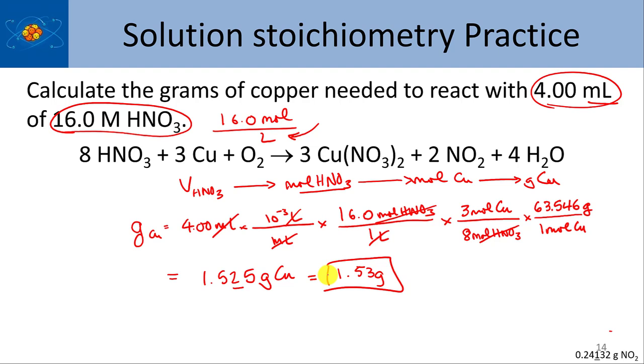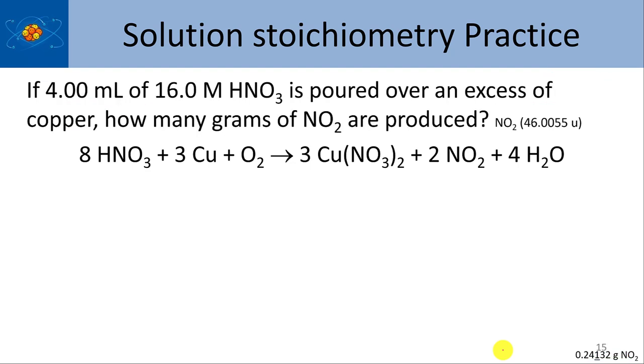Here's another practice problem. If 4 mils of 16 molar nitric acid is poured over an excess of copper, how many grams of NO2 are produced? Same reaction, same amount of nitric acid, and what you need to do now is convert it over to moles of NO2, and then grams of NO2. So draw your solution map, and then lay the problem out, and then, while the video is paused, in a few seconds the answer will pop up and we'll go over it.